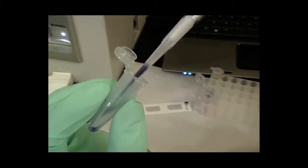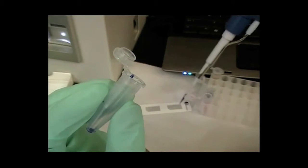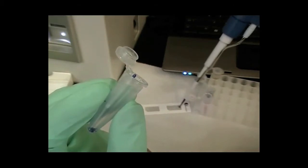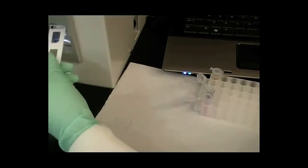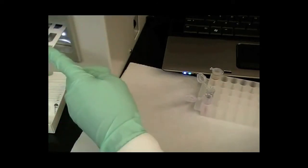Twenty microliters of sample is pipetted into a cellometer counting chamber and allowed to settle for one minute. The chamber is then inserted into the Cellometer Auto T4 cell counter.